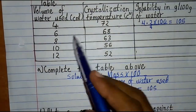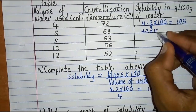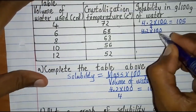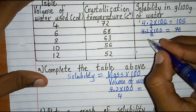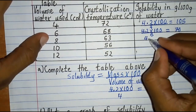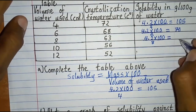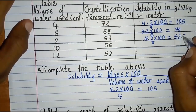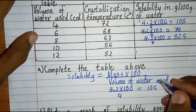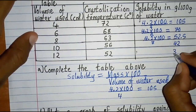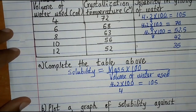For 6 cubic centimeters of water: 4.2 × 100 ÷ 6 = 70. For 8 cubic centimeters: 4.2 × 100 ÷ 8 = 52.5. And so on — for 10 cubic centimeters you get 42, and for 12 cubic centimeters you get 35. That is the formula used to calculate solubility for each volume.